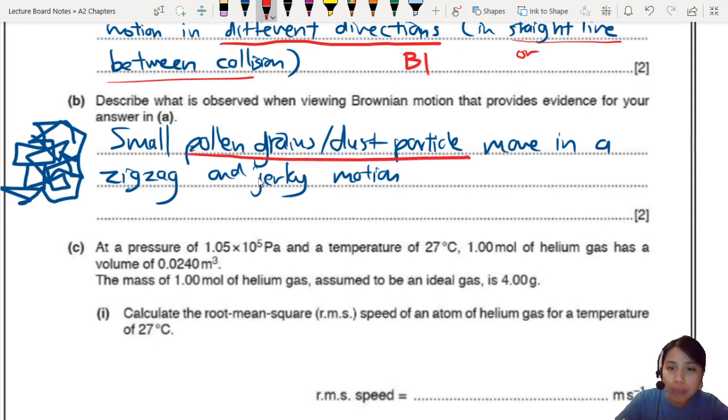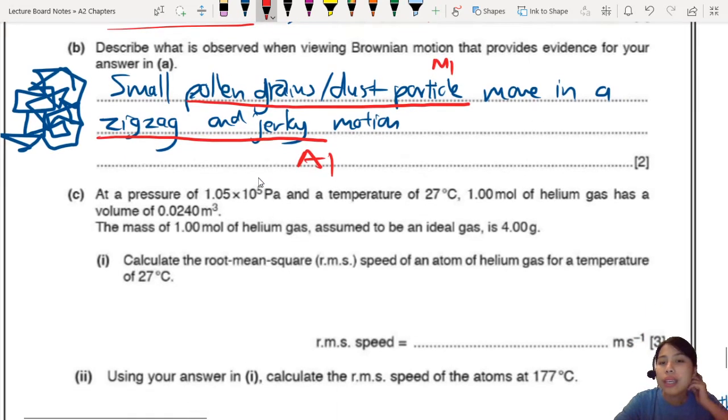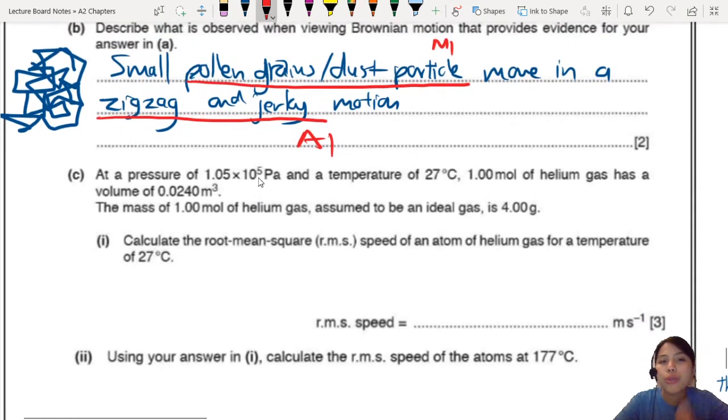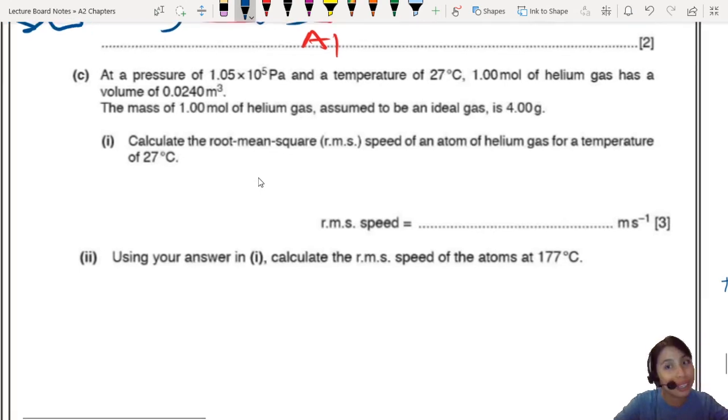So you can talk about pollen grain, dust particles, smoke particles, whatever you mention, that will give you one mark. And if you say random, haphazard, zigzag, jerky motion, that is another mark already. Alright. Moving on. Now, this is the part where I want you to try out first. So pause the video. Try this out if you have not. Because this one will be quite interesting to brain.